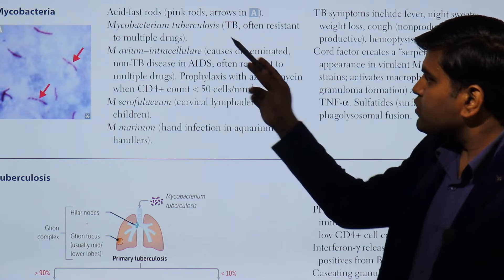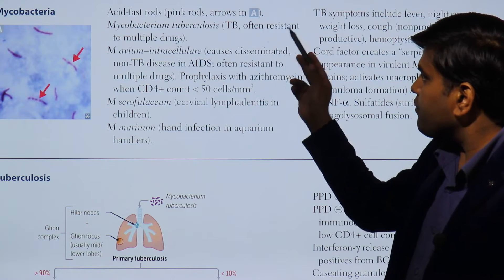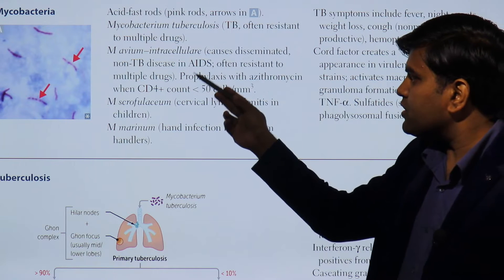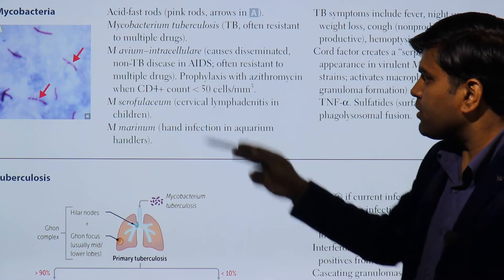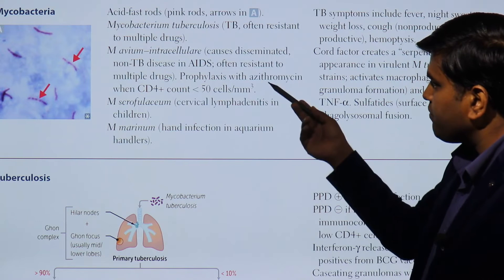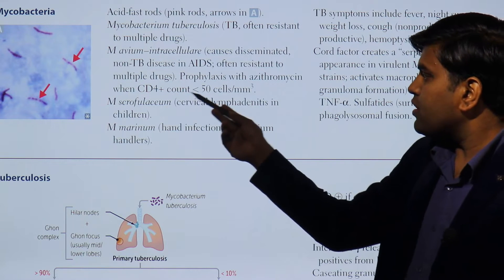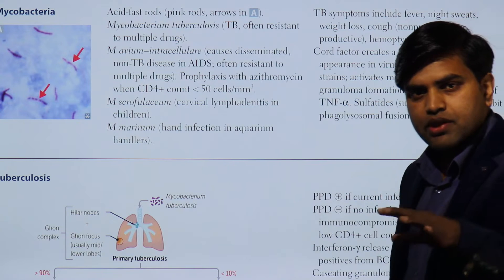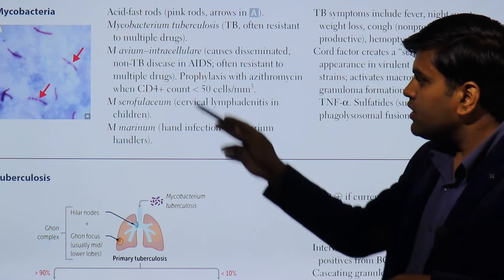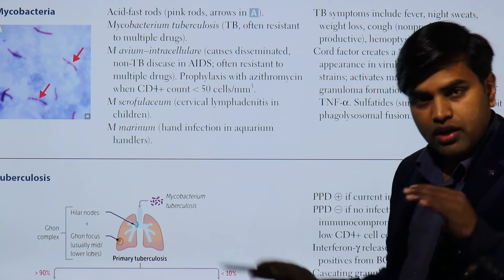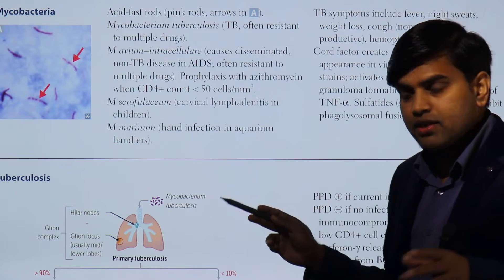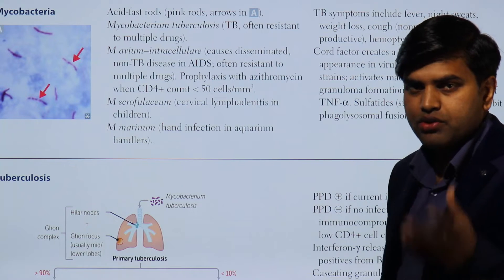Mycobacterium tuberculosis causes tuberculosis, often with multidrug resistance. Mycobacterium avium-intracellulare causes disseminated non-tuberculosis disease in AIDS and is often resistant to multiple drugs. In AIDS patients, when the CD4 count goes below 50, you give prophylaxis with azithromycin. Mycobacterium tuberculosis can cause disease in any person, but mycobacterium avium-intracellulare will only cause disease in AIDS patients when their CD4 count goes below 50.